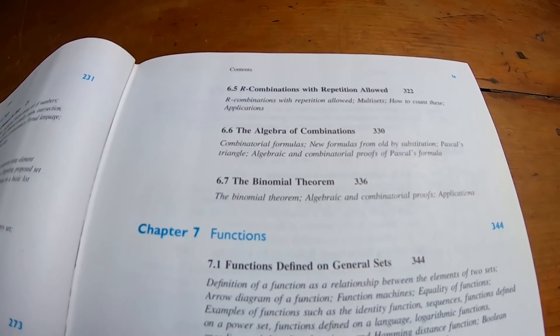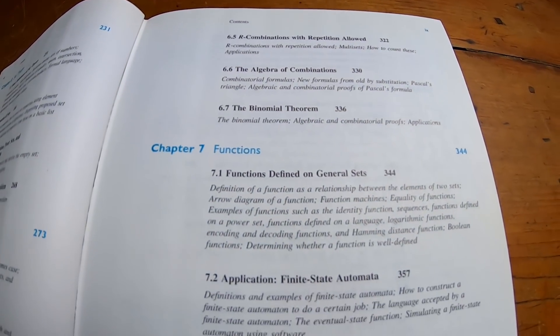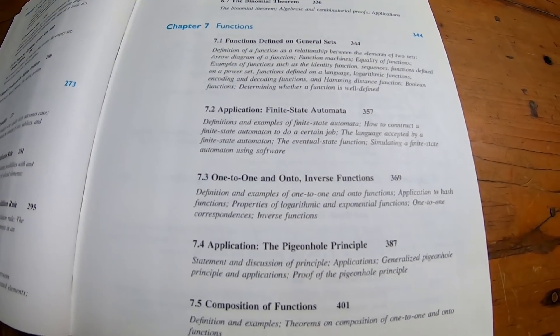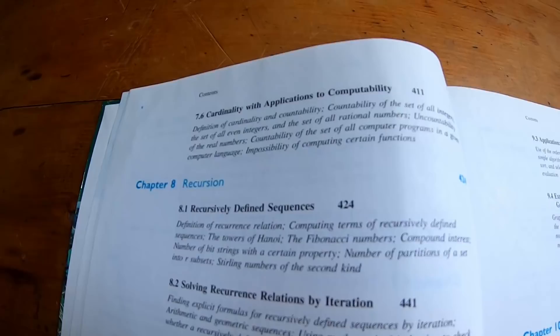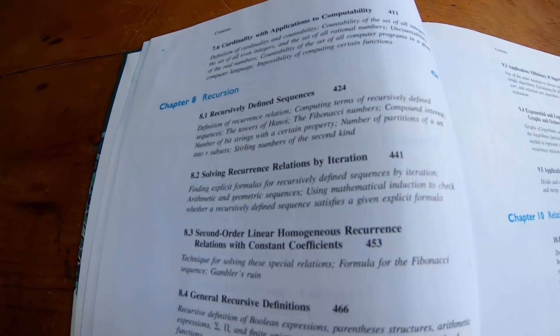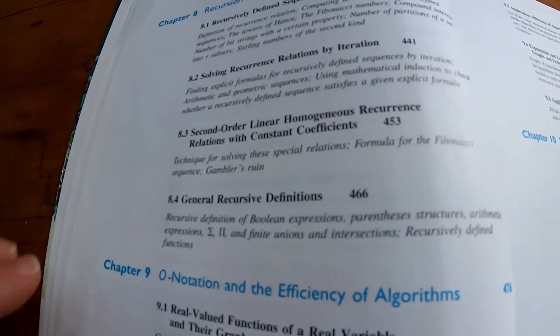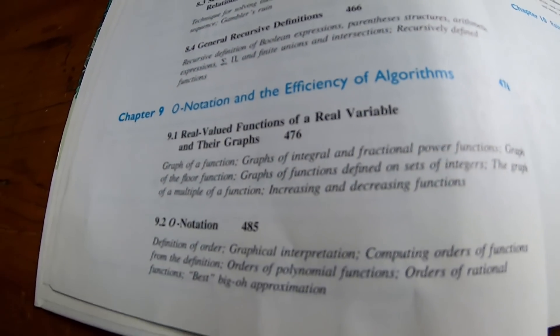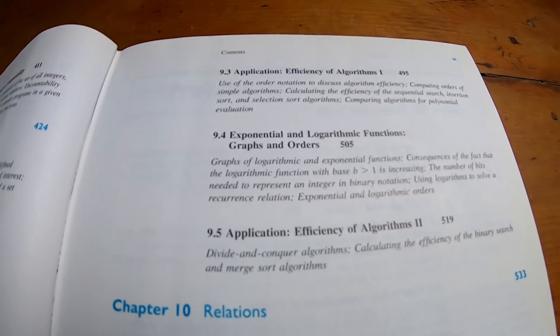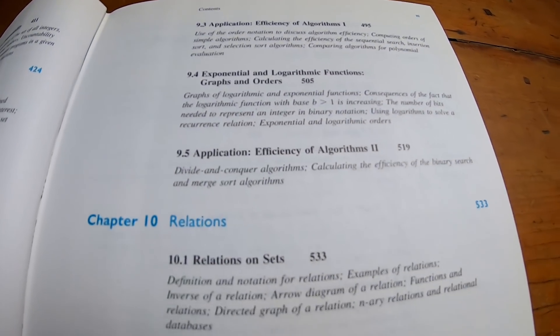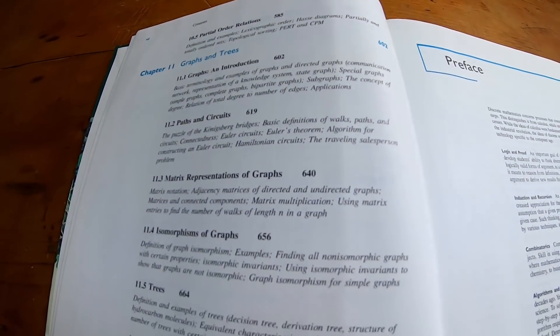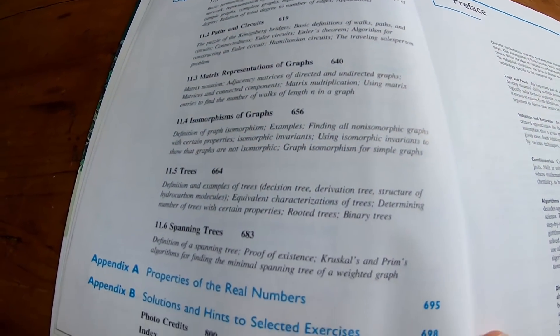I picked it up for less than $10. The table of contents is just massive because they provide so much information for each section. But it's all the really basic, standard stuff that you would see in a discrete math class. Susanna Epp covers all of this and more.